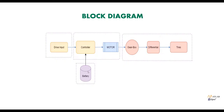From this block diagram, the motor will provide mechanical energy to the gearbox for operation. The motor will take power from the battery. If we directly connect the battery to the motor, speed control is not possible. Therefore, we are going to connect a controller between the battery and the motor. Now let us start the modeling.